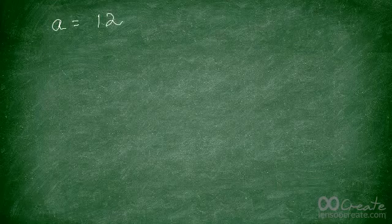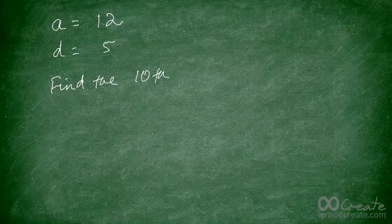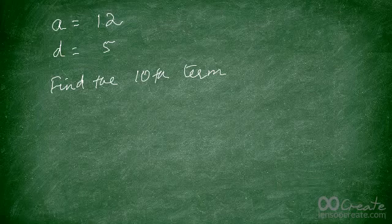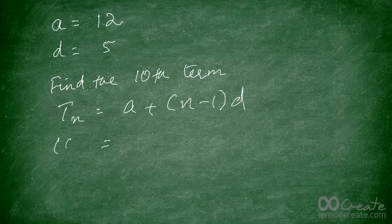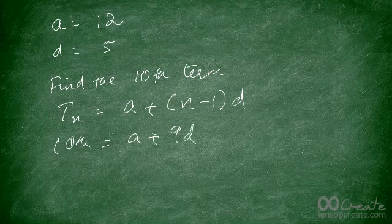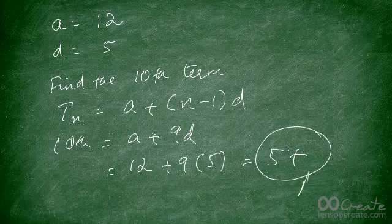Let's try an example. The first term a is 12 and the common difference d is 5. Find the 10th term. Using the formula, the 10th term is a + 9d, which is 12 + 9 × 5 = 12 + 45 = 57. So the answer is 57.